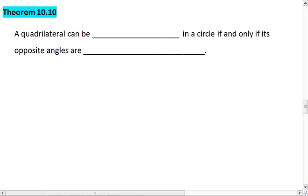Theorem 10.10 tells us that a quadrilateral can be inscribed in a circle if and only if its opposite angles are supplementary.